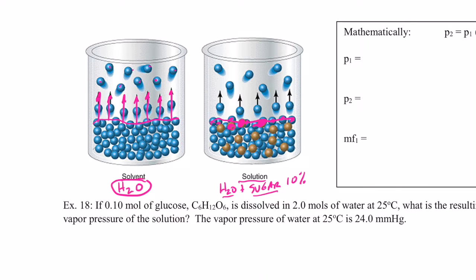So will there be as many water molecules available to leave the surface? No, because sugar molecules have taken their place. Fewer water molecules will enter the gas phase — 10% fewer. So the vapor pressure at that same temperature drops by 10% of what it was when I had pure water.